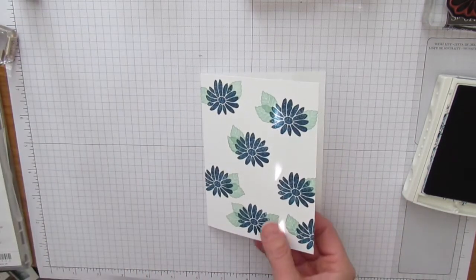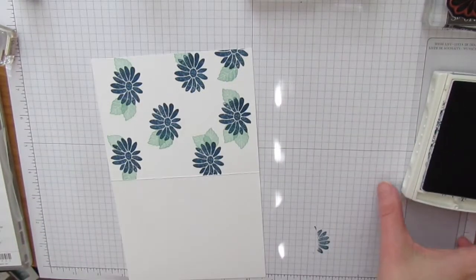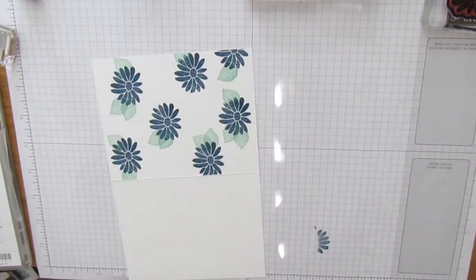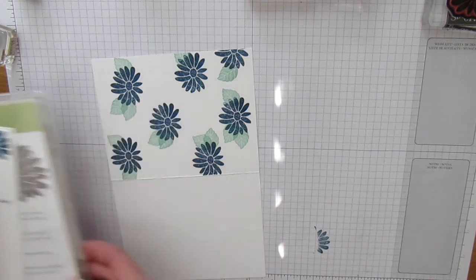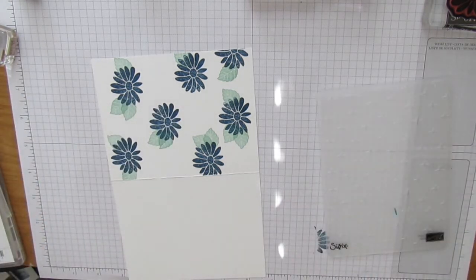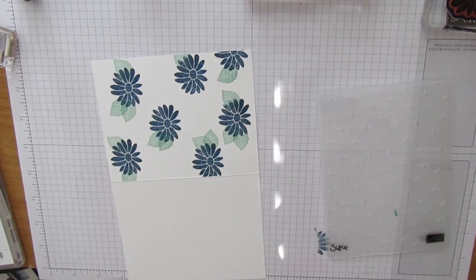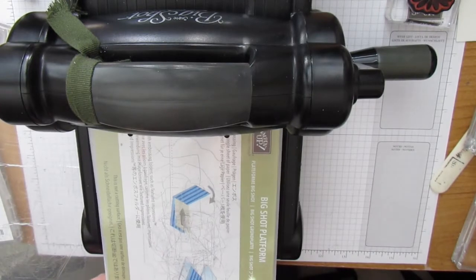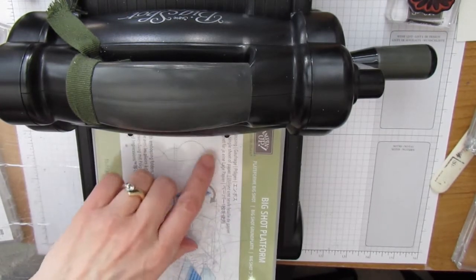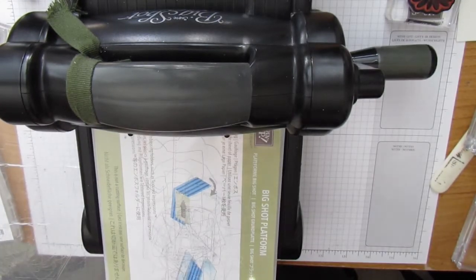The next thing I'm going to do is put it through the embossing folder. I am using the sparkle embossing folder and the Big Shot die cut machine.